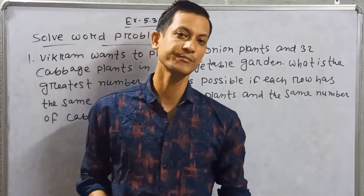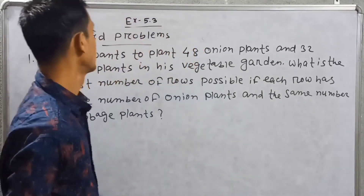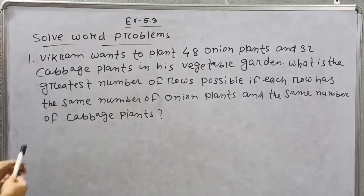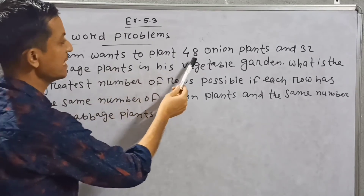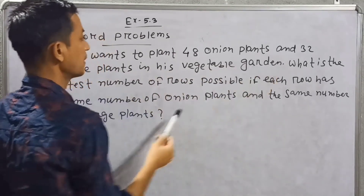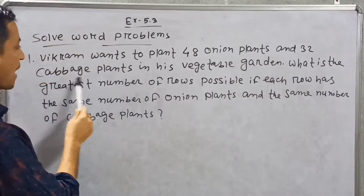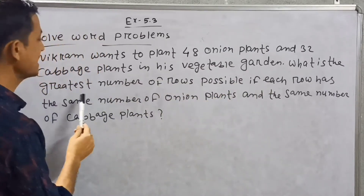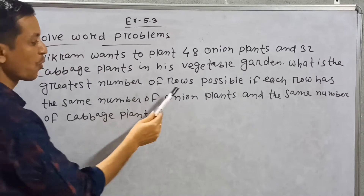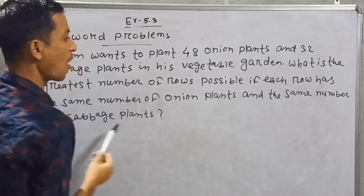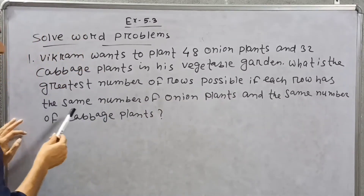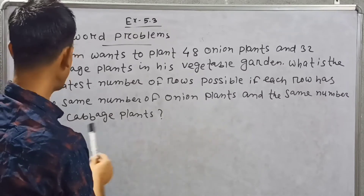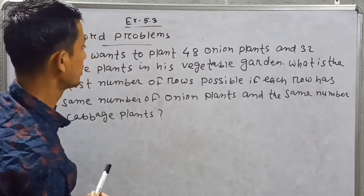Welcome back to my channel. Vikram wants to plant 48 onion plants and 32 cabbage plants in his vegetable garden. What is the greatest number of rows possible if each row has the same number of onion plants and the same number of cabbage plants?